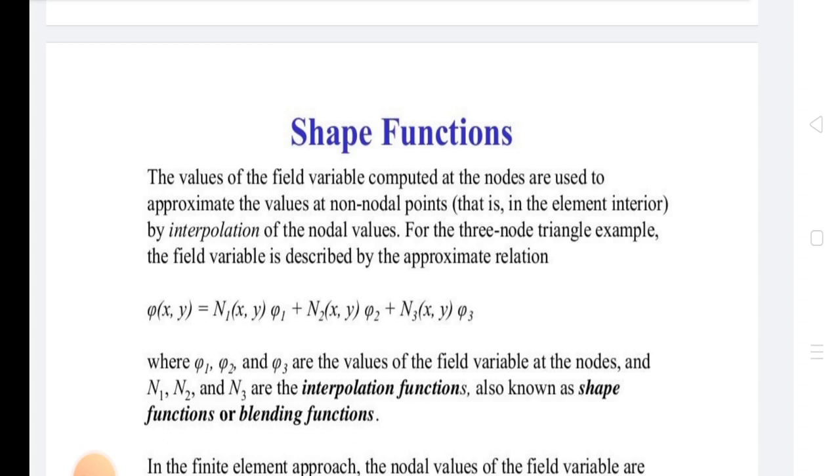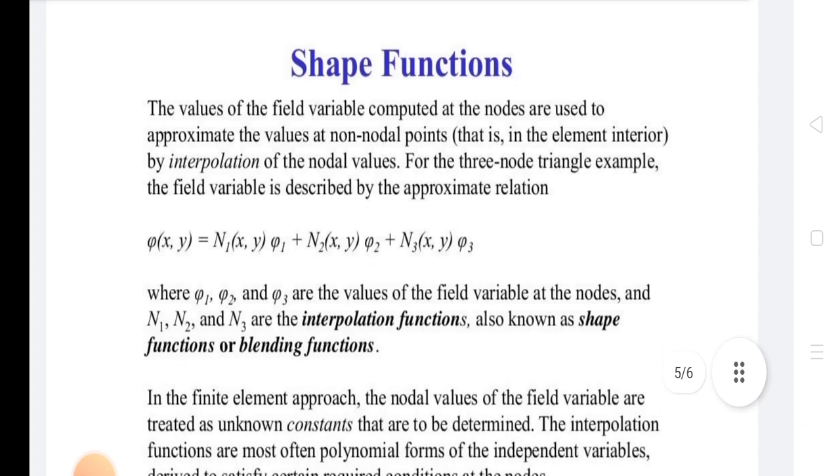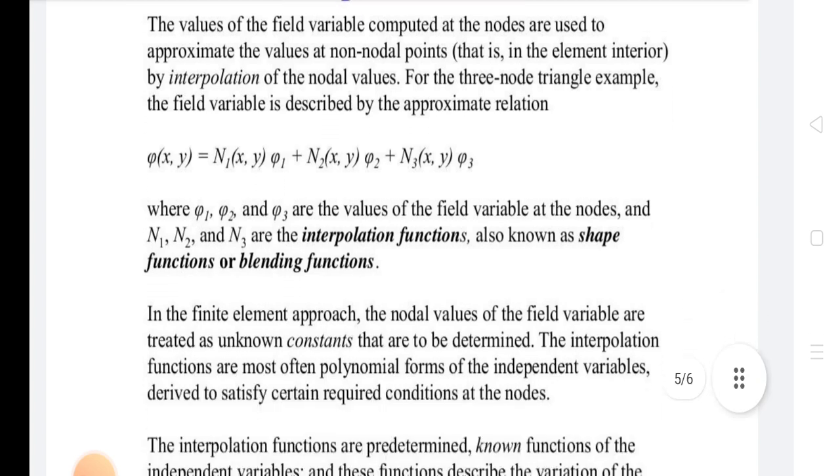Where φ1, φ2, φ3 are the values of the field variable at the nodes, and N1, N2, and N3 are the interpolation functions, also known as shape functions or blending functions.